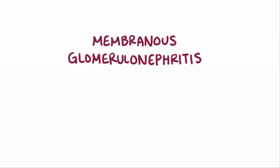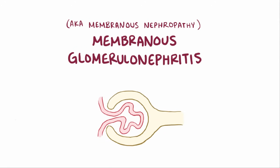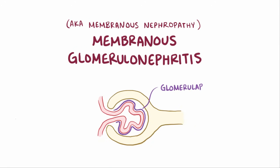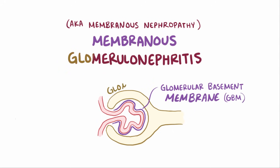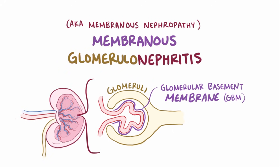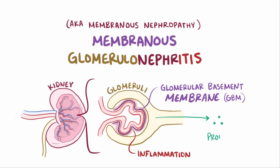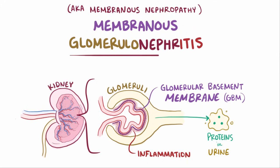Membranous glomerulonephritis, also known as membranous nephropathy, is where the glomerular basement membrane, or GBM, which lines the glomeruli in the kidney, becomes inflamed and damaged, which results in increased permeability and proteins being able to filter through into the urine, causing nephrotic syndrome.